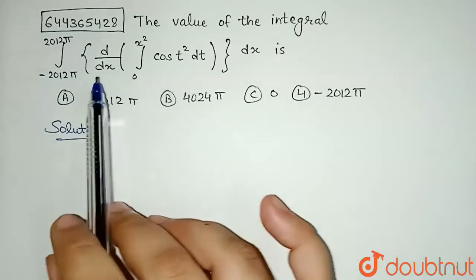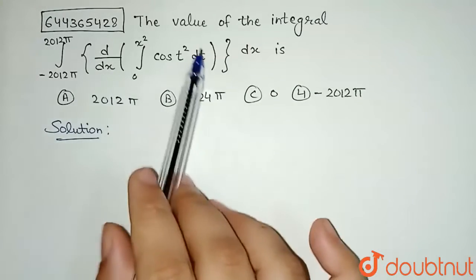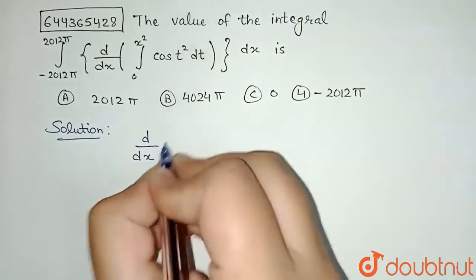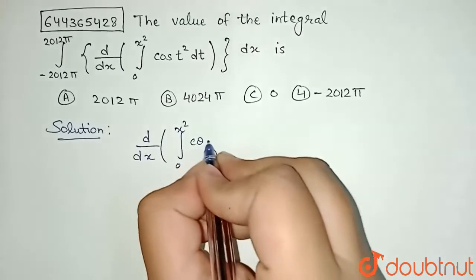What I will do first is find d/dx of this integral. So let us find d/dx of the integration from 0 to x² of cos(t²) with respect to dt.